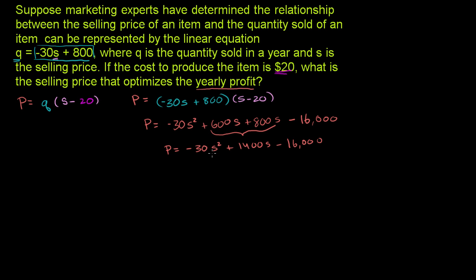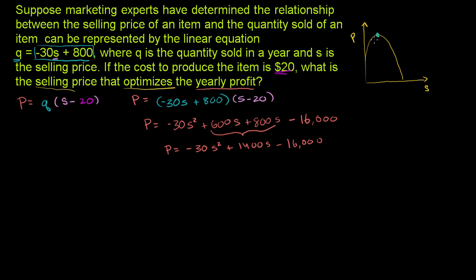We have a negative coefficient on the s² term, which tells us this will be a downward opening parabola. If this is our profit axis and this is our selling price axis, the parabola will be downward opening. We're asked to find the selling price that optimizes the yearly profit — we want the maximum point, which is the vertex.